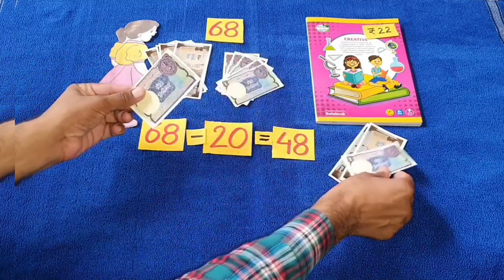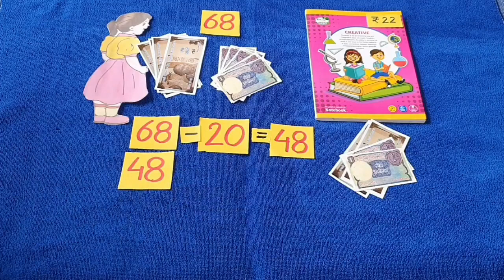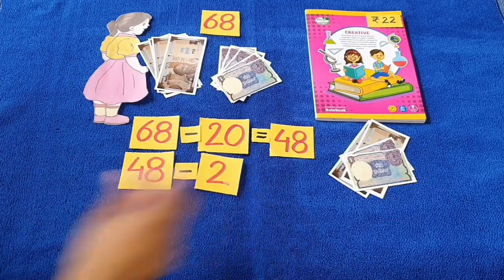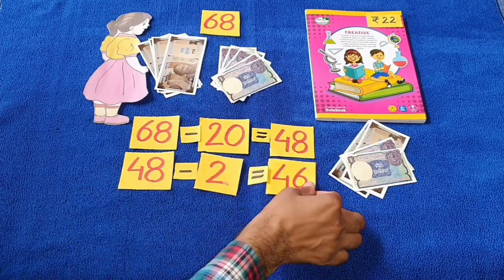Now, she gave 2 rupees to the shopkeeper. She had 48 rupees. She gave away 2 rupees. How much money is left with Sandeep now? Yes, 46 rupees.